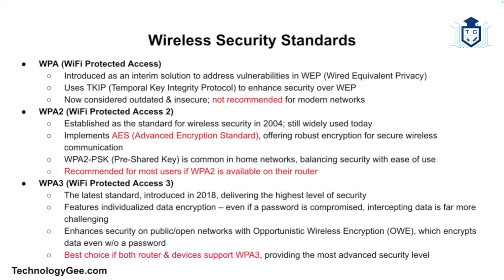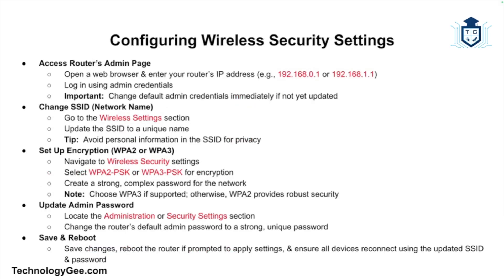If your router and devices support WPA3, that will be the best choice for enhanced security. To configure your wireless network for maximum security: access your router's admin page by opening a web browser and entering your router's IP address — typically 192.168.0.1 or 192.168.1.1. Log in using the admin credentials and change them immediately if still set to default. Then navigate to wireless settings and change the SSID to a unique name, avoiding personal information.